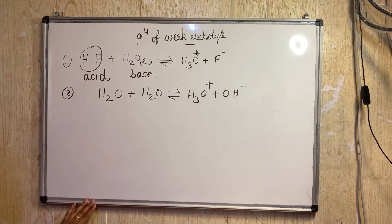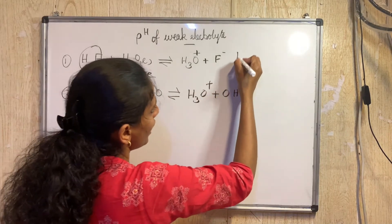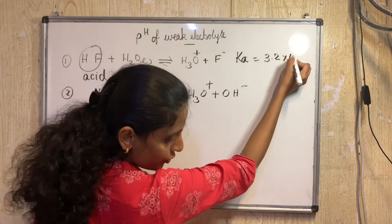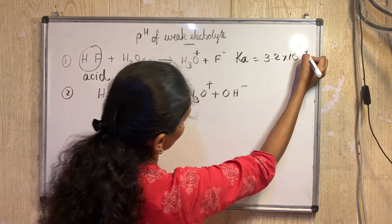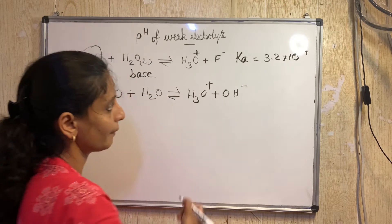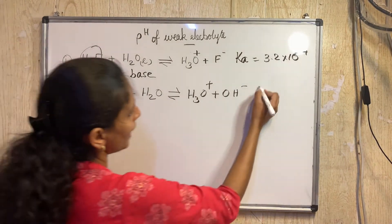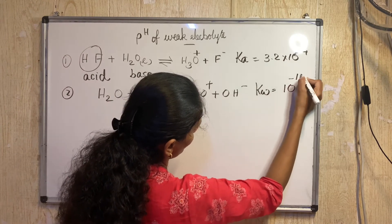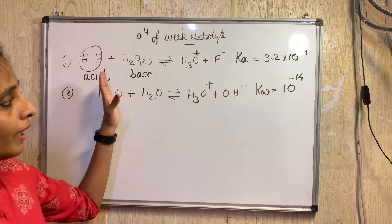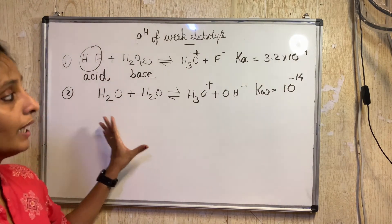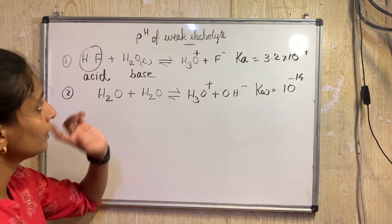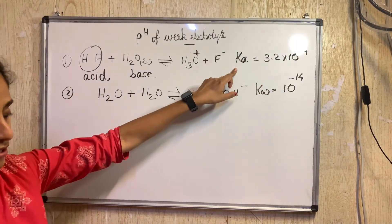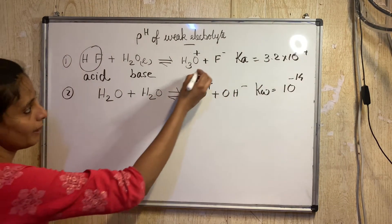If we ask the Ka of the first reaction, Ka = 3.2 × 10⁻⁴. For H2O dissociation, this is Kw = 10⁻¹⁴. So the first reaction has the highest K value, which means the dissociation of HF in water is the primary reaction.